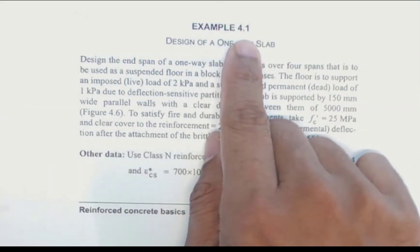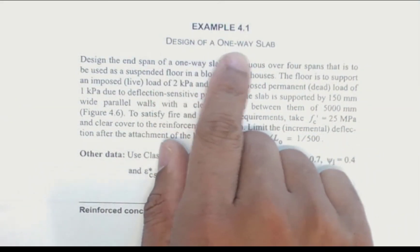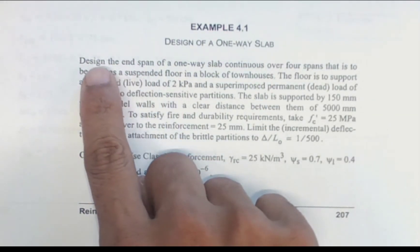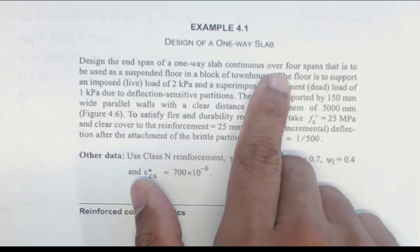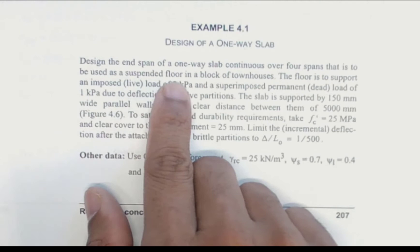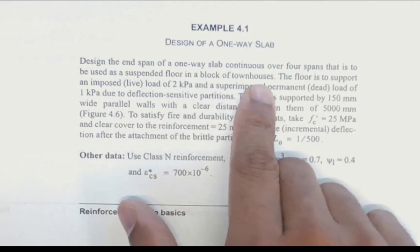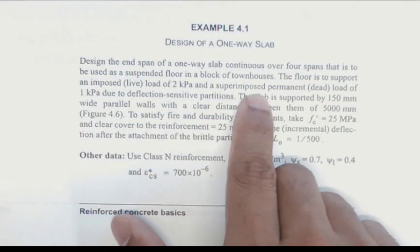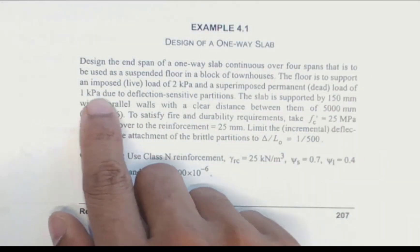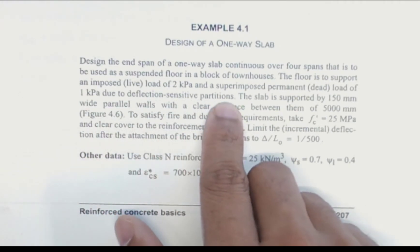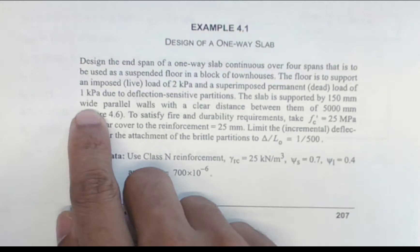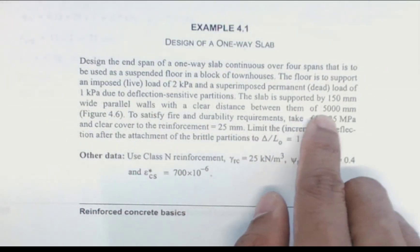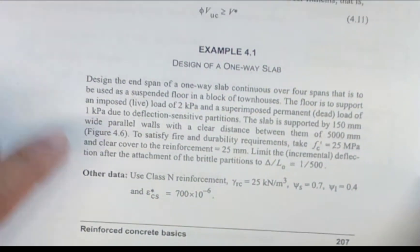This video explains Example 4.1, which is the design of one-way slabs. The question is: design an n-span one-way slab continuous over four spans, to be used as a suspended floor in a block of townhouses. The floor is to support an imposed live load of 2 kilopascals and a superimposed permanent dead load of 1 kilopascal due to deflection-sensitive partitions. The slab is supported by 150 millimeter wide parallel walls with a clear distance of 5000 millimeters between them.